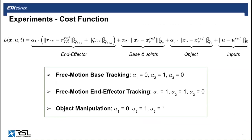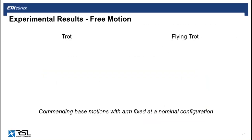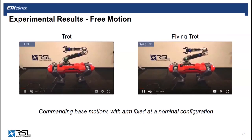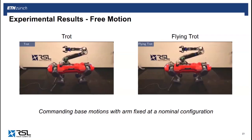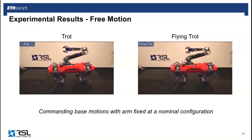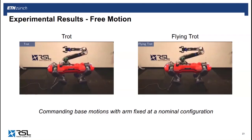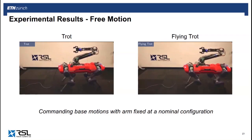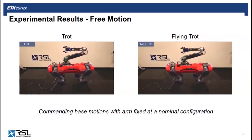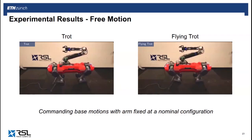We performed various experiments both in simulation and on real hardware, divided into free motion tasks and object manipulation tasks. All task descriptions are encoded in a single cost function that allows switching between commanding the robot's base, commanding its end effector, or specifying a target for the manipulated object. We start with a simple test on the real system demonstrating two dynamic gaits: a trot and a flying trot. A high penalty is imposed on arm joint motion to keep it at a nominal configuration, so the planner treats the arm as a lumped mass with respect to the base, and the arm plays no role in balancing.